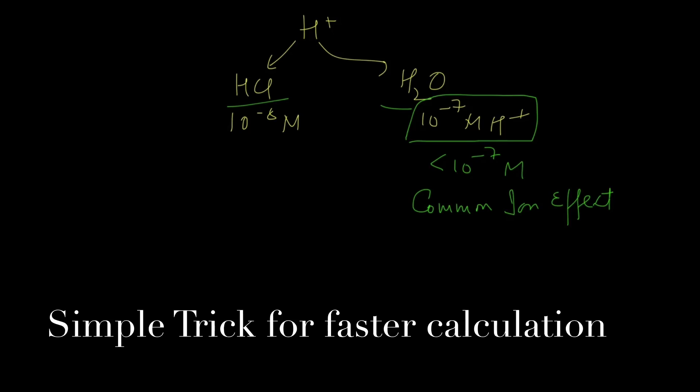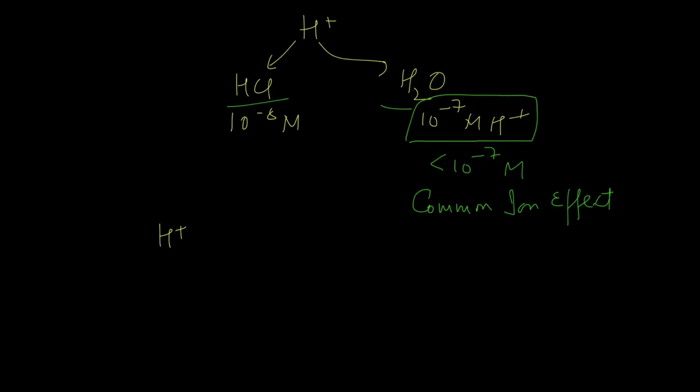So now the total amount of H+ that we have is equal to 10 to the power minus 8 plus 10 to the power minus 7 M H+, and that can be written as 1 into 10 to the power minus 8 plus 10 into 10 to the power minus 8. And therefore H+ is equal to 11 into 10 to the power minus 8.